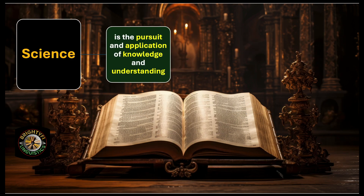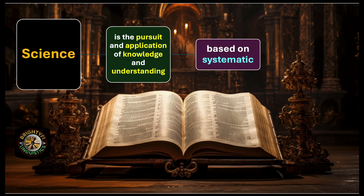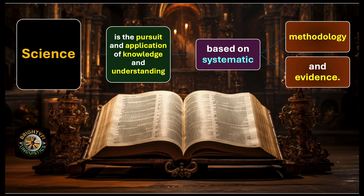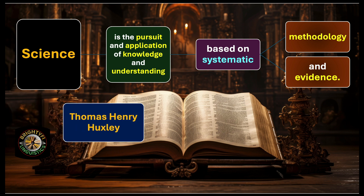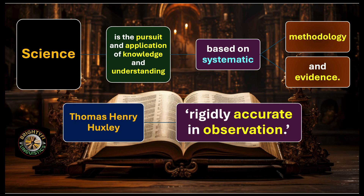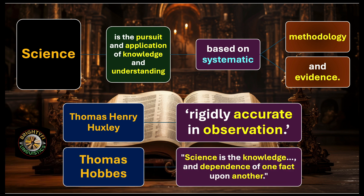Now let's talk about what is science. Science is the pursuit and application of knowledge and understanding based on systematic methodology and evidence — meaning science must be systematic, based on certain methods, and must prove what it is going to explain. Thomas Henry Huxley defines science as rigidly accurate in observation — science always sticks to observation in a factual, accurate manner. Thomas Hobbes defines science as the knowledge of the dependence of one fact upon another. So science is all about facts, truth, systematic methodology, and evidence.